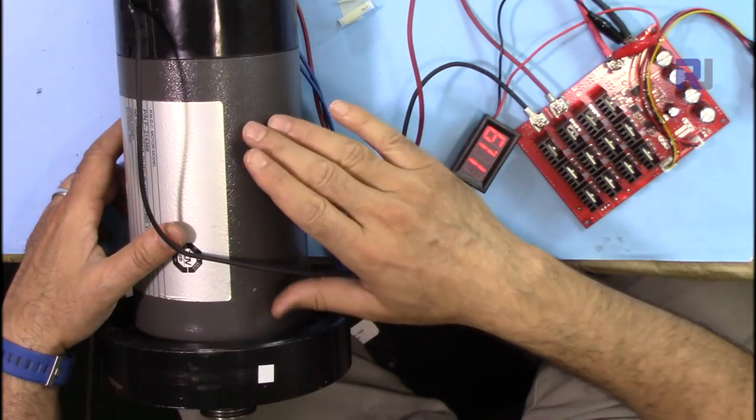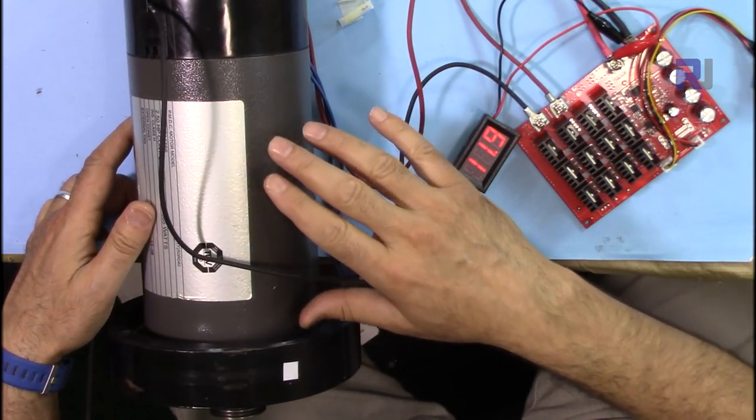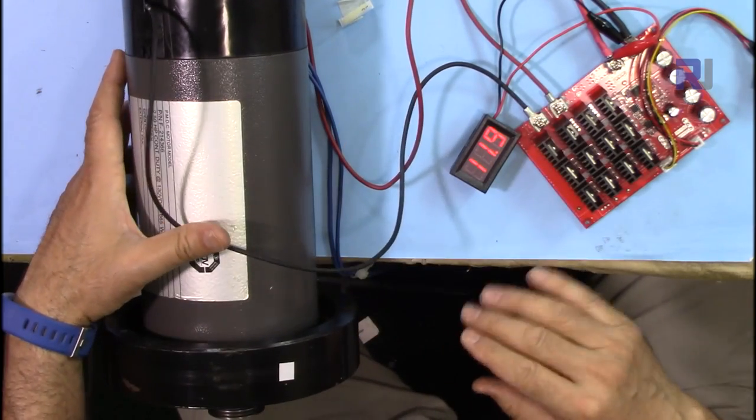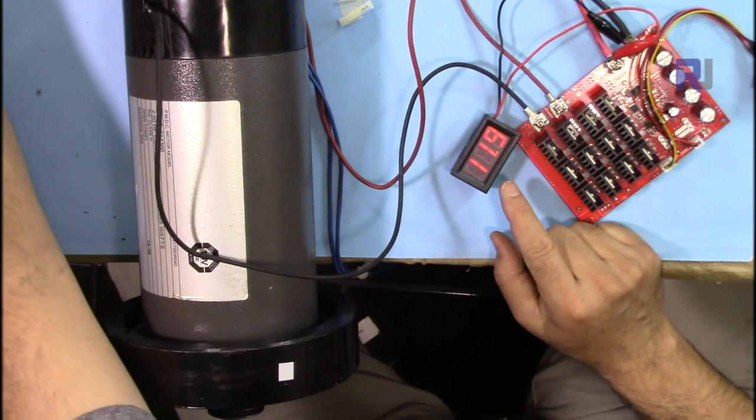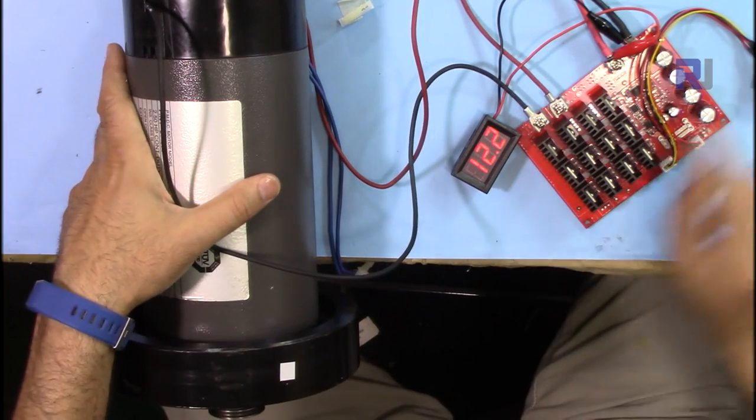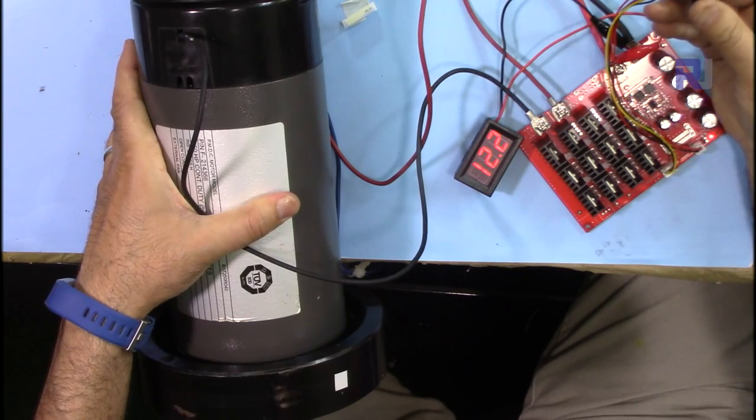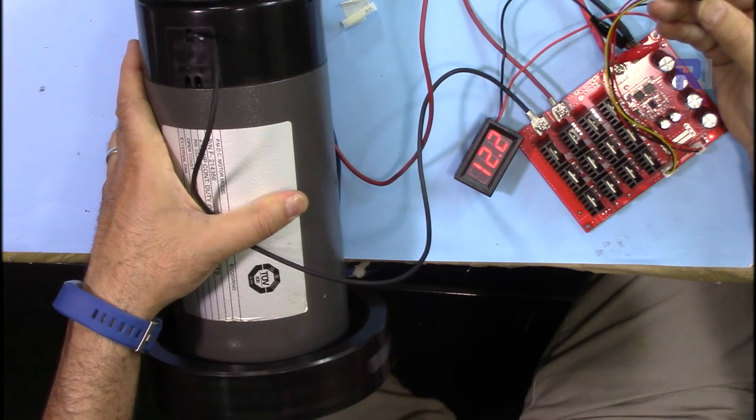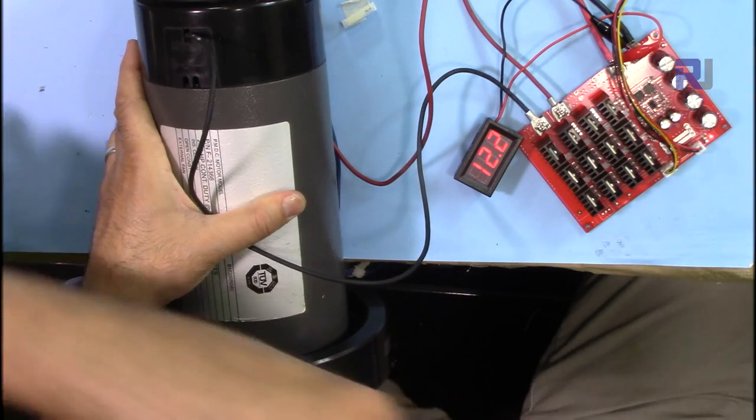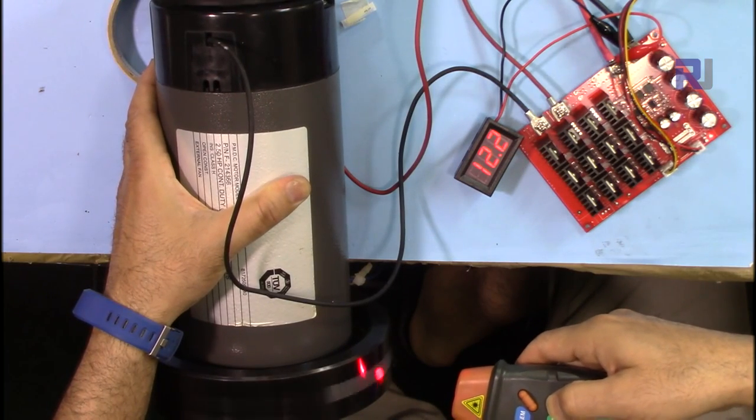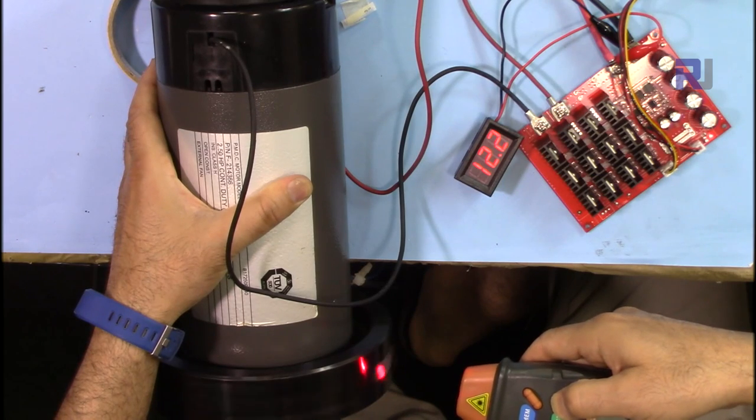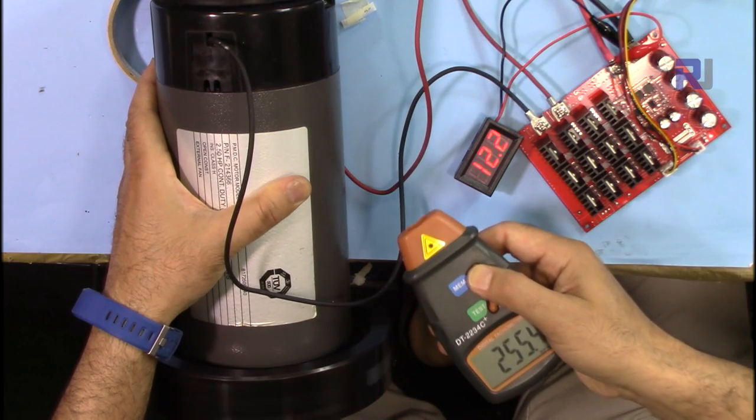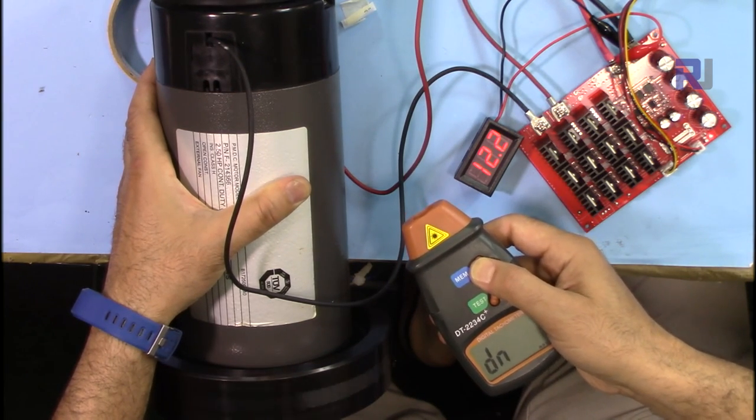The controller is connected to the DC motor that I removed from the treadmill. This is a 130 volt DC but it can work with almost any voltage. Input voltage is now 12 volts and I'm turning it on. Now it's at the maximum speed at 12 volts. Now it's 255 rpm.